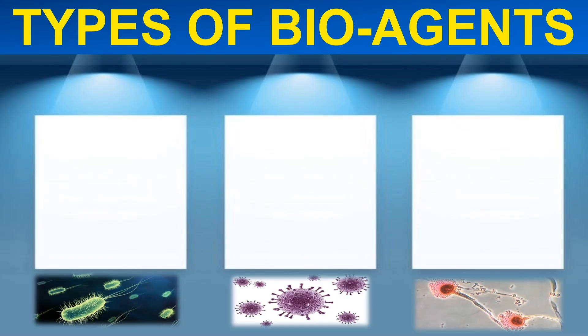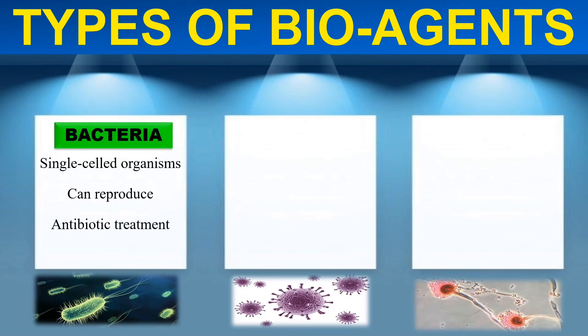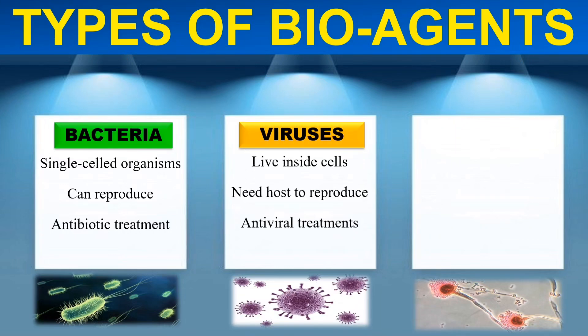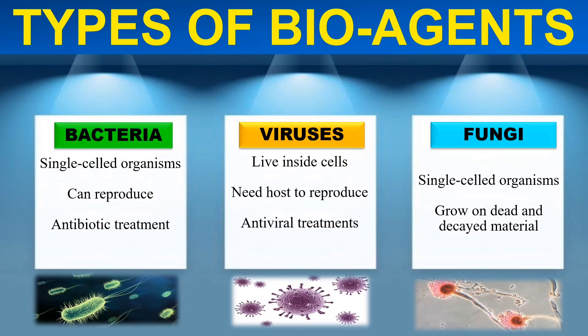The types of bio agents include: first, bacteria — single-celled organisms that can reproduce, and their treatment includes antibiotics. Then viruses, which live inside the cell, require a host for their propagation, and certain antiviral treatments are available to combat them. Then fungi, which are also single-cell microorganisms that grow on dead and decaying material.